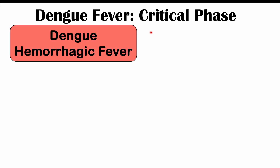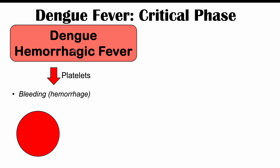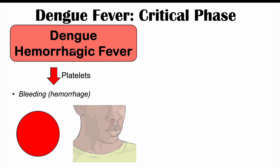There are two conditions that can occur in the critical phase. The first is dengue hemorrhagic fever, which occurs due to a severe drop in platelet count — thrombocytopenia — leading to bleeding and hemorrhage. This includes hematemesis, blood in the stool, nosebleeds, and menorrhagia or excessive menstrual bleeding. It's more likely to occur in younger individuals, especially under the age of 15, although it can happen in adults as well.